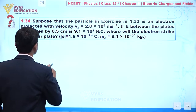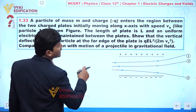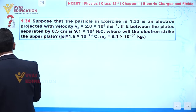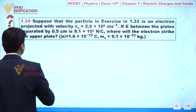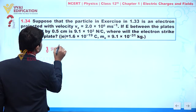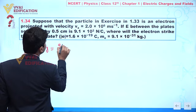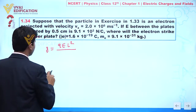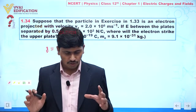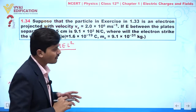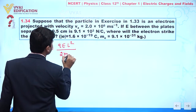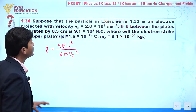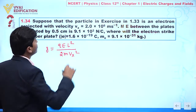We utilize the same formula: y = qEl² / (2mvx²). So we can write y is given by qEl² divided by 2mvx².